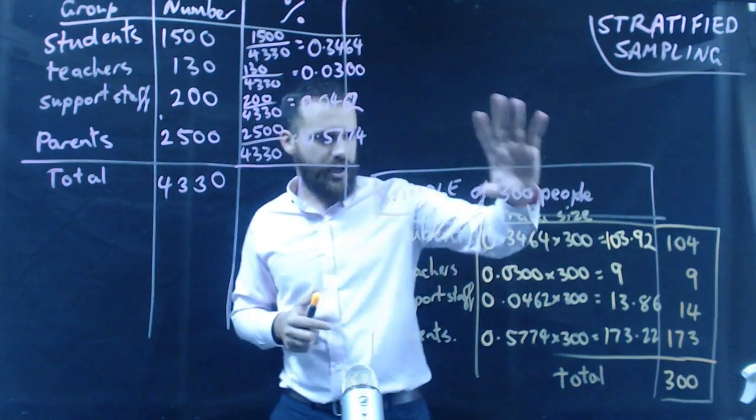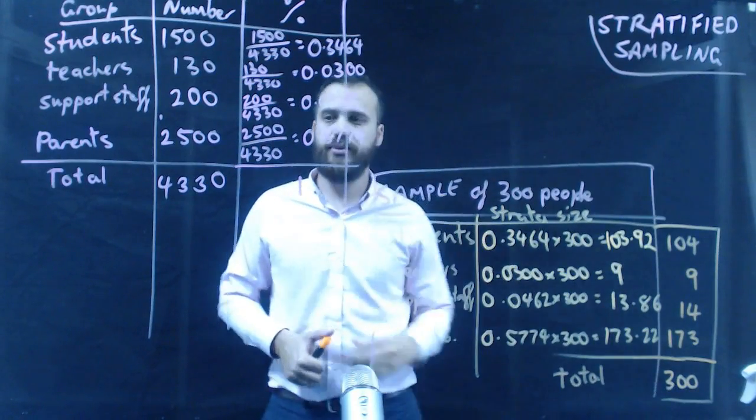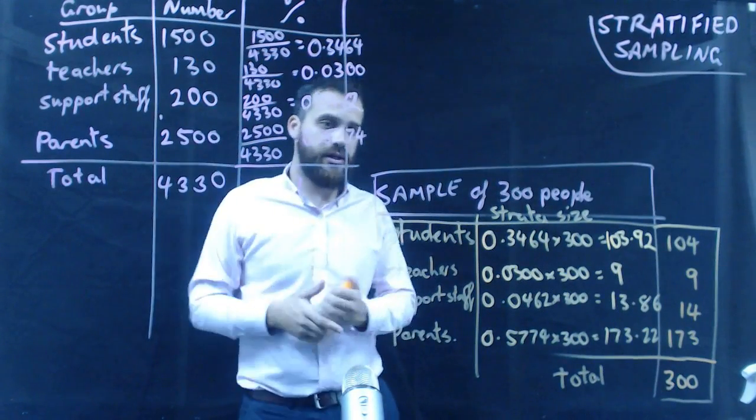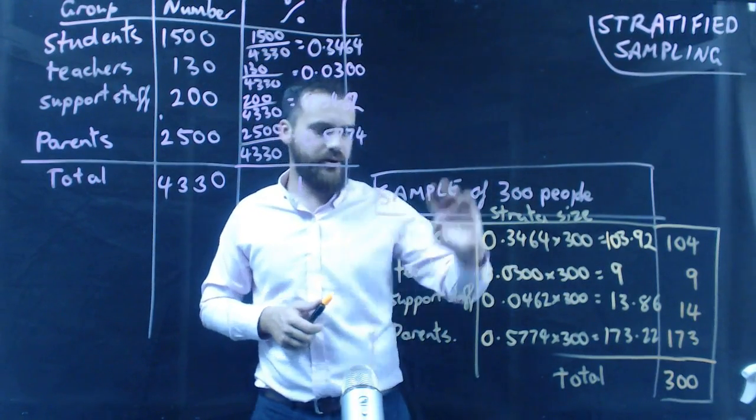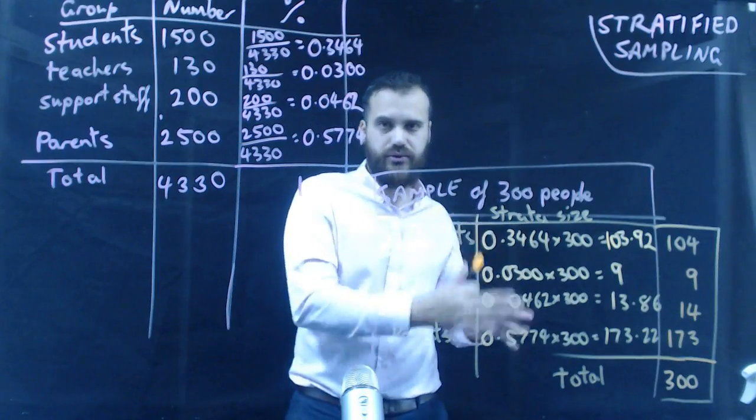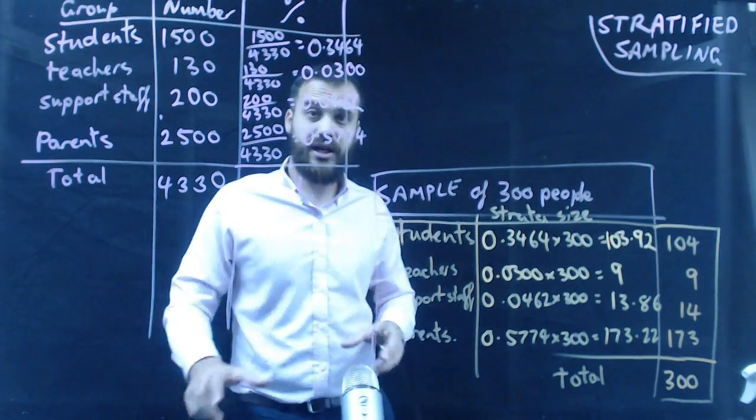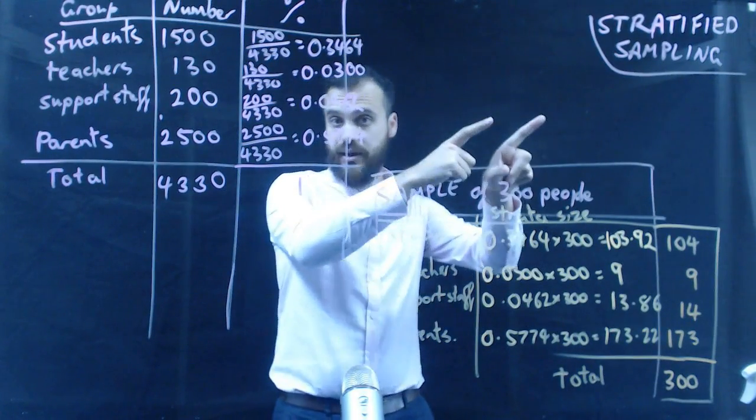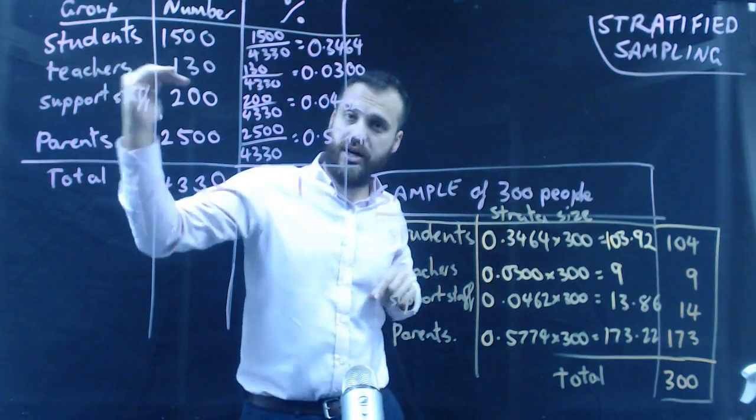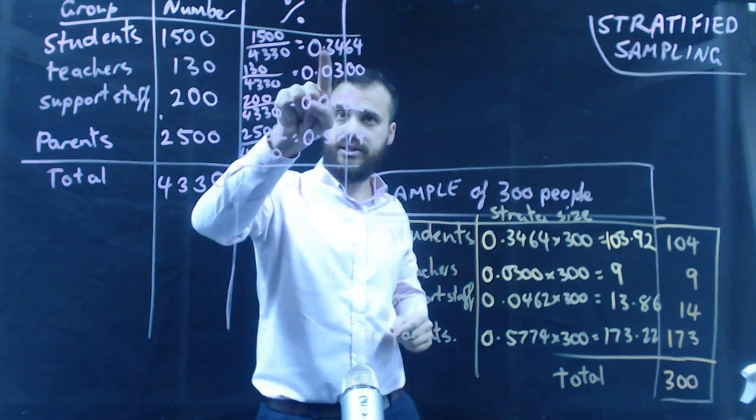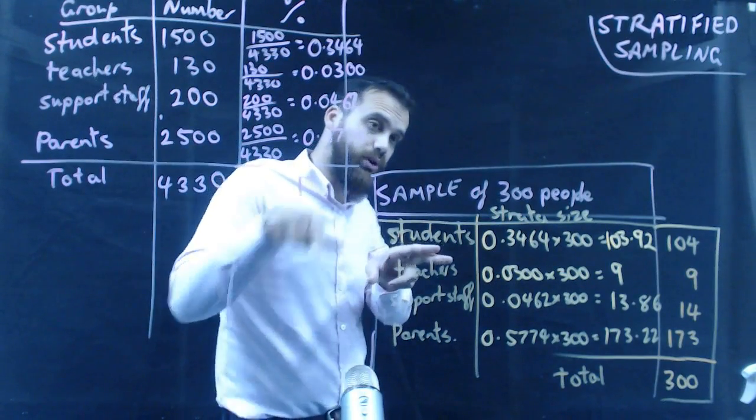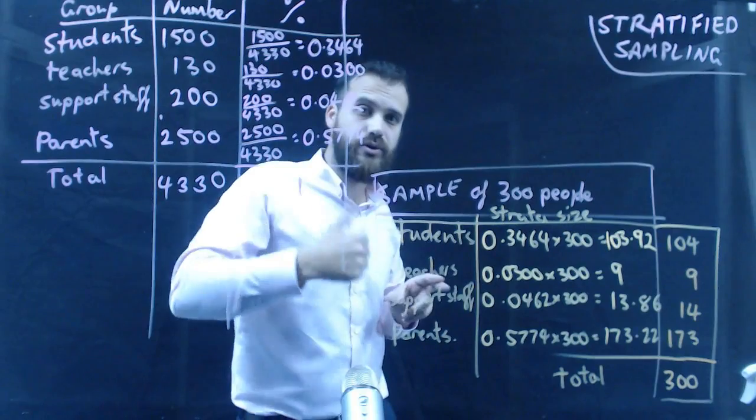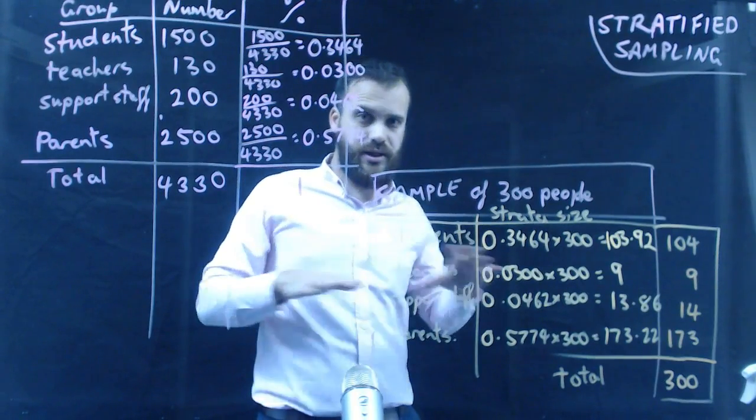So, now we have a sample of 300 people that represent the larger Nudgee community. 104 students, 9 teachers, 14 support staff, and parents, 173. That'll be 300 people. What we've just done is stratified sampling. We broke Nudgee into stratas. We figured out what percentage of Nudgee is represented by each of those stratas. And then we made a smaller sample using those stratas. Done.